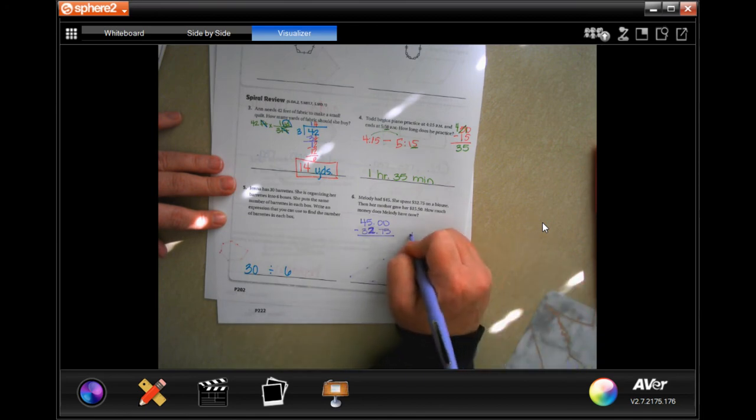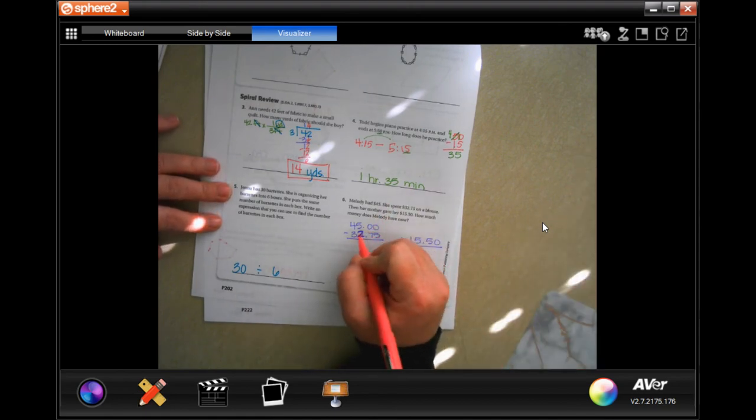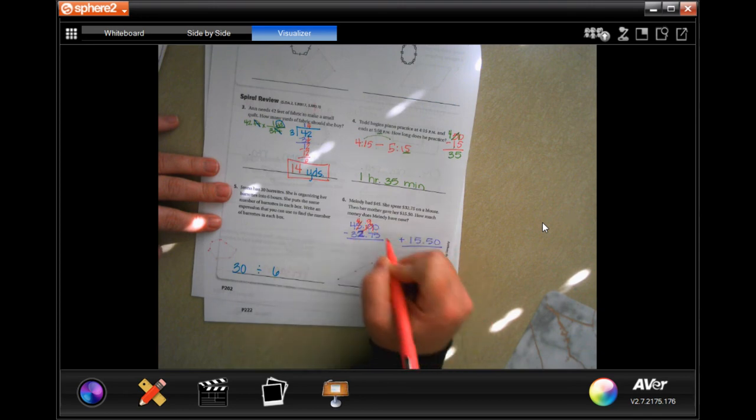Then we're going to take that and we're going to add on that 15.50 to find out how much she has. All these zeros, can't take away anything, so I'm going to borrow one, making that one a ten, but then I have to borrow one of those, making that a ten.